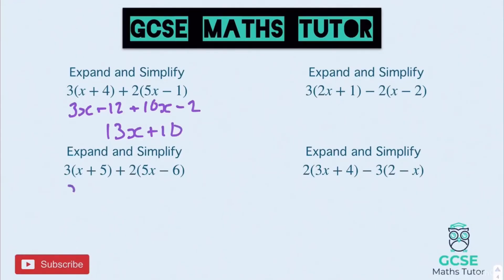Onto the one below. We get 3x plus 15 plus 10x. And that'd be minus 12 at the end there. And then tidying that all up, 13x plus 3.